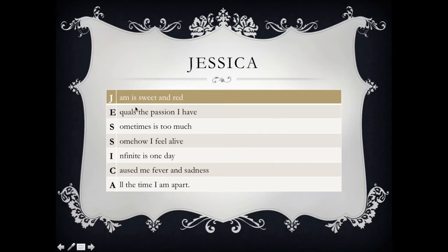Let's see. So I created here: J - Jen is sweet and red. E - Equals the passion I have. S - Sometimes it's too much. S - Somehow I feel alive. I - Infinity is one day. C - Caused me fever sad. A - All the time I'm apart. Pretty sad.